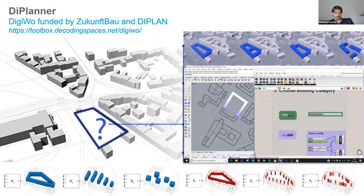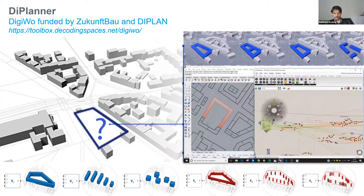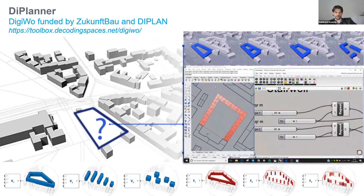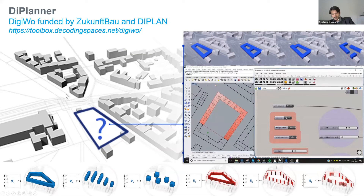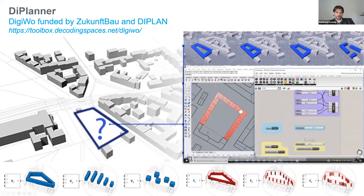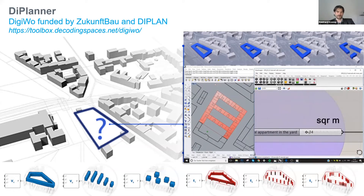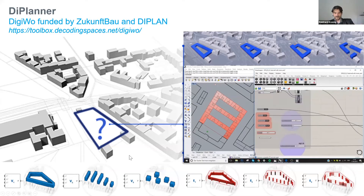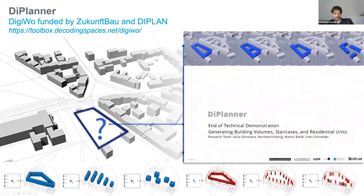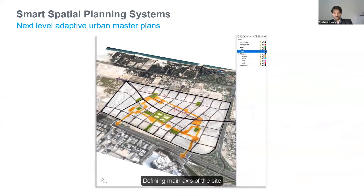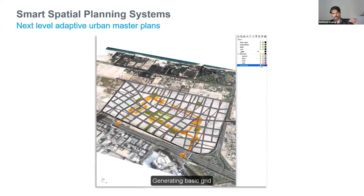Another example is this urban planner tool, developed in the last two years together with a company called dplan, where the aim is that you select a new site and the developer immediately wants to know what they can build on it. We get site information from Google Maps, cadastre data, and OpenStreetMap — the surrounding buildings, building regulations — and the system generates building variants linked to the allowed FAR and distances, giving a first rough estimation of how many square meters you can build on the plot.